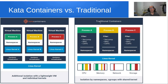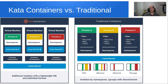Whereas in traditional containers, you have your process running with its namespaces, but it sits directly on top of the host kernel and utilizes the host kernel resources for CPU, memory, network, and storage. Basically, Kata containers provide one additional level of virtualization to improve performance and security.